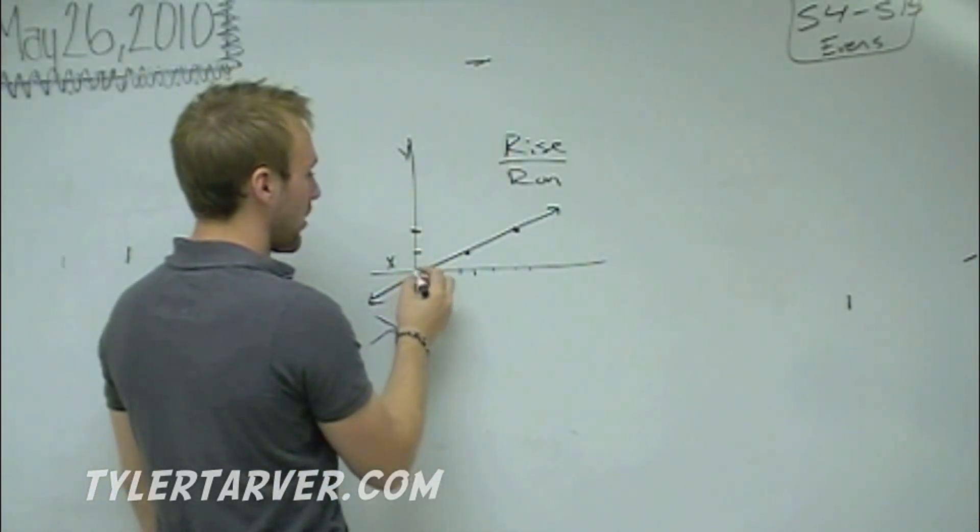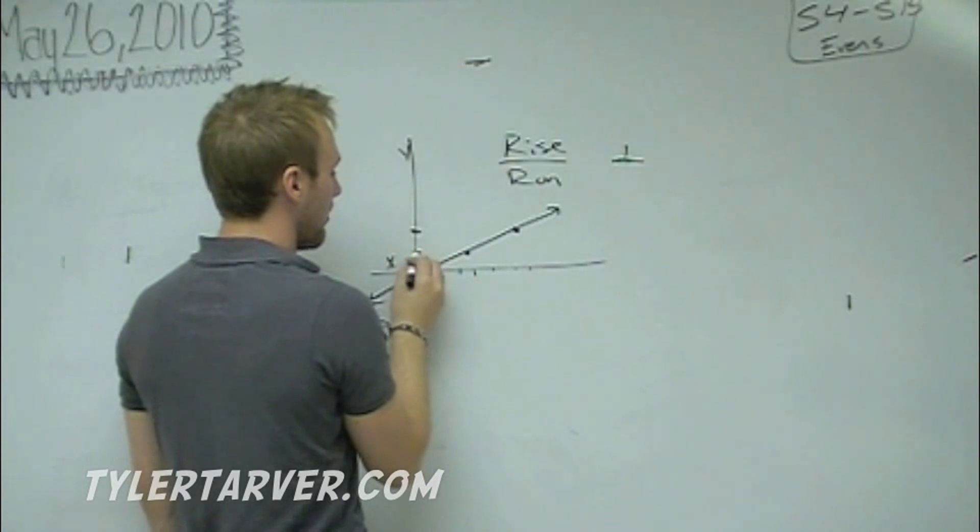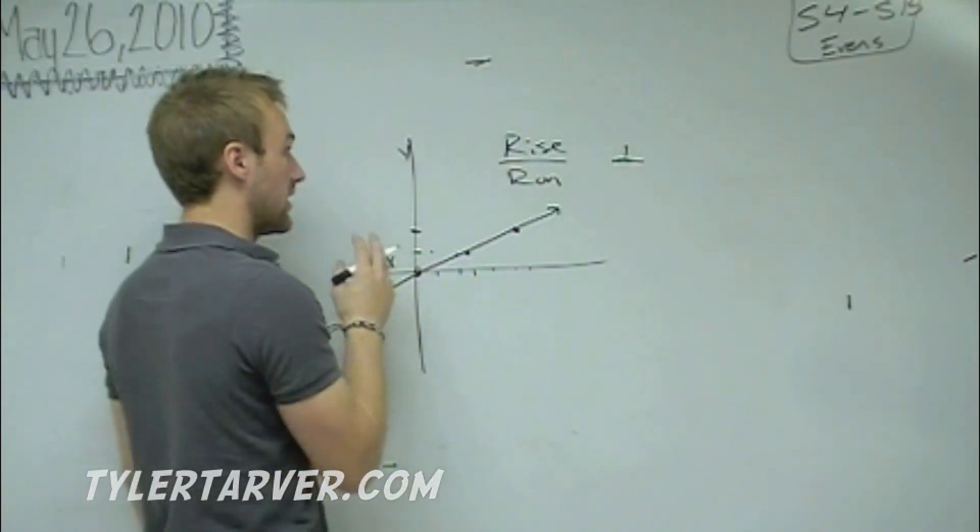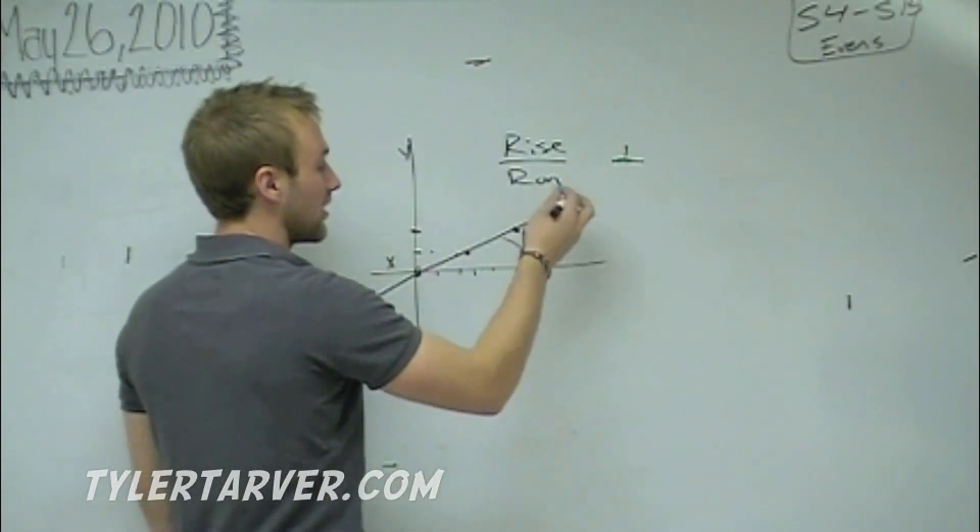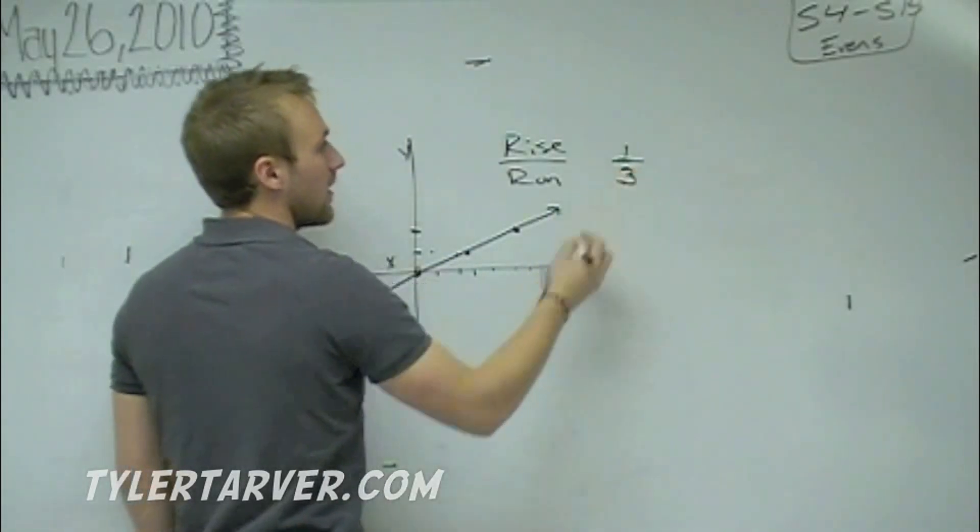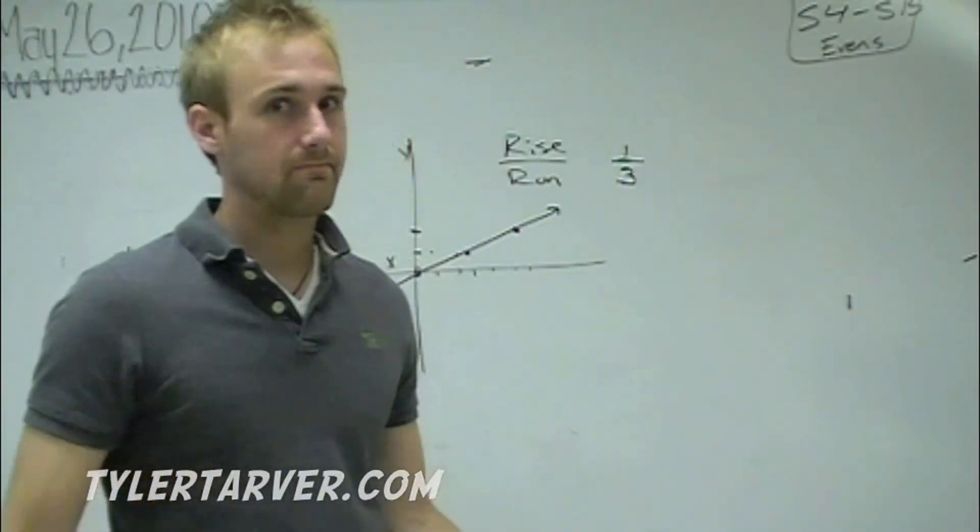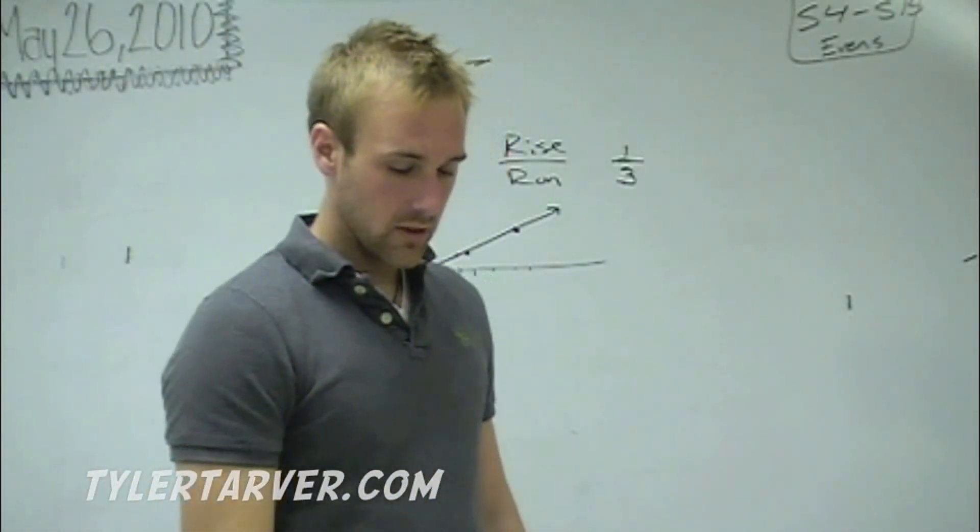What we're going to do is, first we do the rise. How far do we go up to get to our next point? 1. So it goes on top. And then we run, that's how far we go over. 1, 2, 3. Obviously my graph is messed up, but that's your fault. Just kidding, it's my fault. So when we run, it's side to side. Because you can't run up in the air, can you? You run side to side. That's 3. That for our slope is 1 over 3. That's it. That's the whole deal.